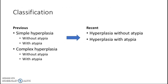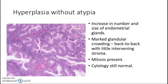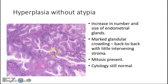Previously, endometrial hyperplasia was classified as simple and complex hyperplasia with or without atypia, but it has been reclassified into hyperplasia without atypia and hyperplasia with atypia. Hyperplasia without atypia shows an increase in number and size of endometrial glands with marked crowding — back-to-back glands with little intervening stroma. Mitosis is present, but the cytology is still normal, meaning there is no atypia.